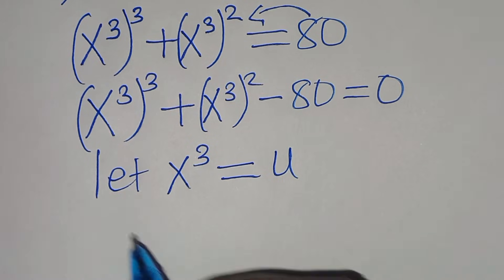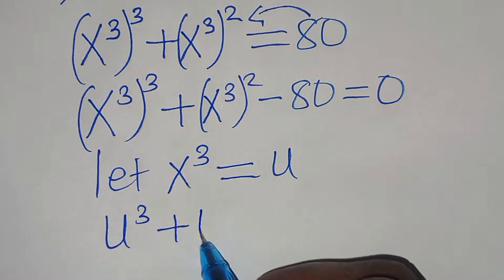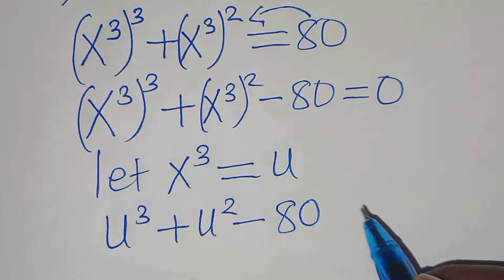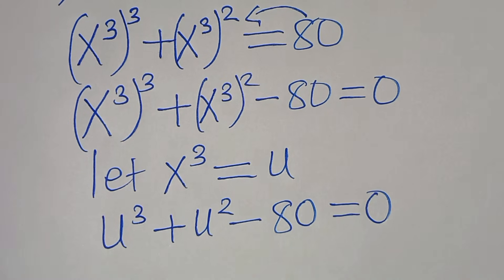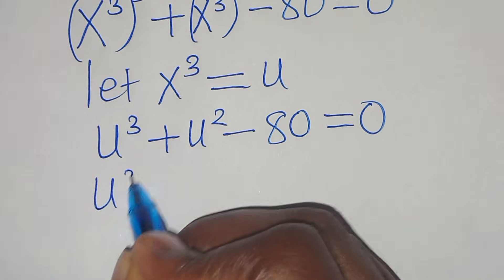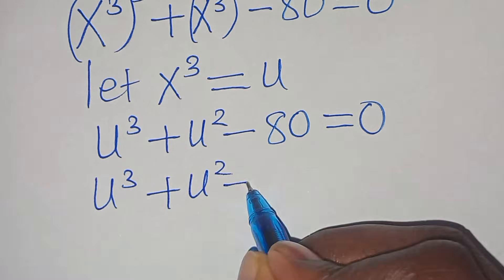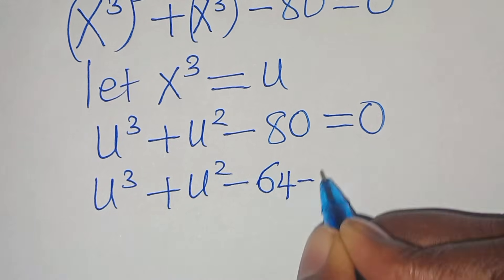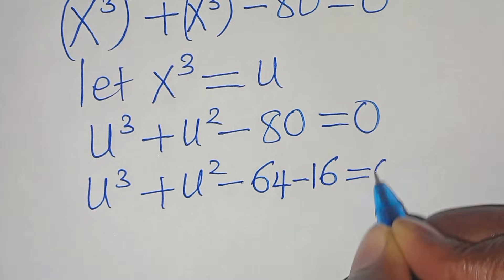Now let u = x³, so we have u³ plus u² minus 80 equals 0. We can split 80 as 64 plus 16, giving us u³ plus u² minus 64 minus 16 equals 0.